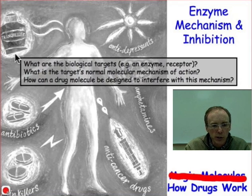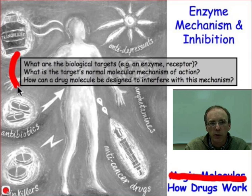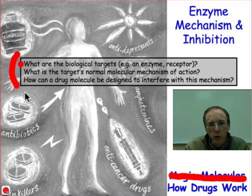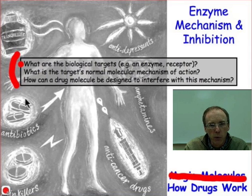In setting out to think about how drug molecules work, the key questions that we need to address — and the questions we're going to be addressing in this webcast and the upcoming webcasts — are illustrated for you here. We need to stop and think about: what are the biological targets of interest? What molecules, what proteins, might we want to interfere with in order to achieve selective toxicity? Or what proteins might we want to inhibit in order to correct some diseased state?